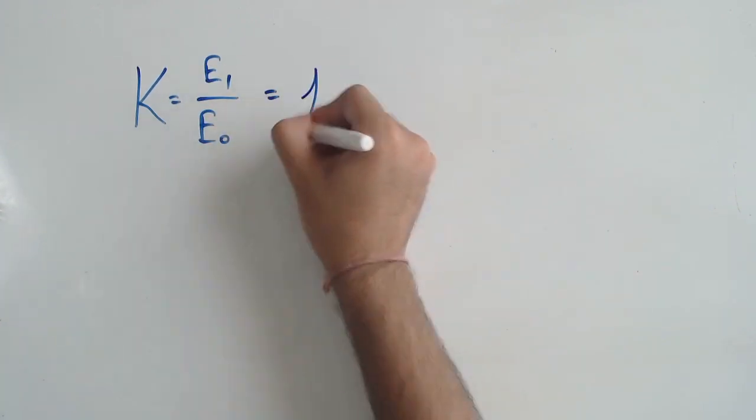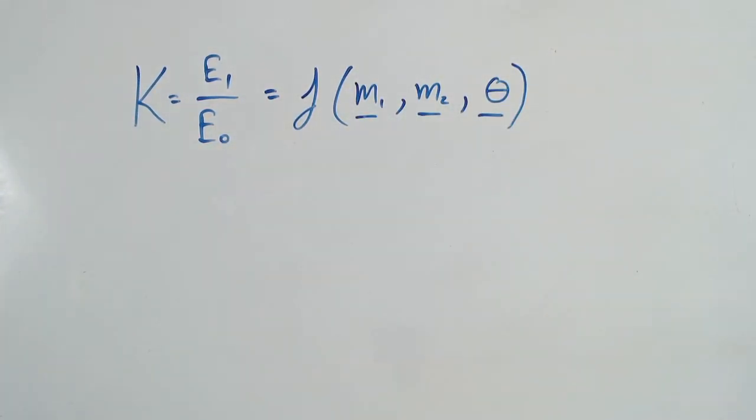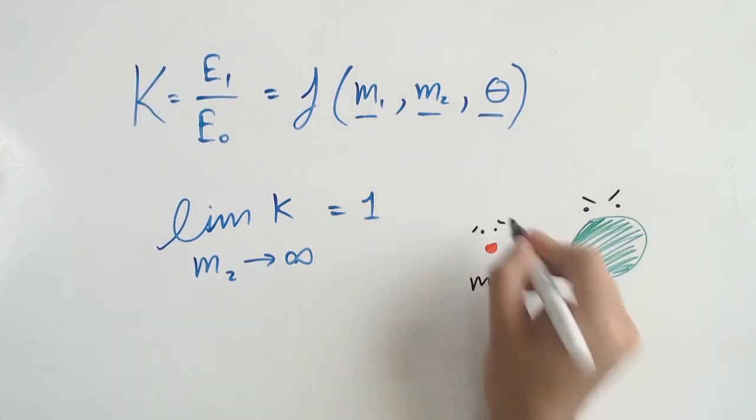The trend goes that the kinematic factor, which is a function of both the masses of the projectile and the target particle, as well as the angle at which we recorded a scatter, can go up to 1 as the target atom mass becomes heavier and heavier.